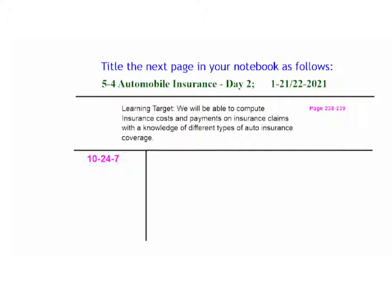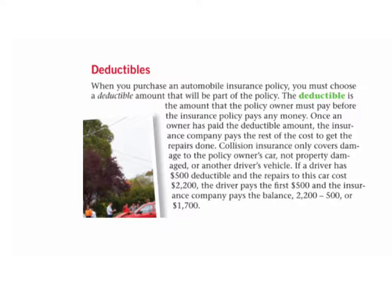Here's a bit of reading for the second part of our lesson. Deductibles: when you purchase an automobile insurance policy you must choose a deductible amount as part of the policy. The deductible is the amount the policy owner must pay before the insurance company pays any money. Once the owner has paid the deductible amount, the insurance company pays the rest of the cost to get the repairs done.